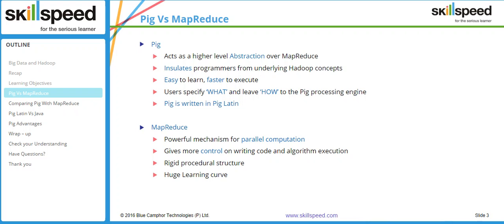Another key advantage of MapReduce is that it is really helpful in analyzing unstructured data. Whereas Pig will fail with audio, video, and completely unstructured data, MapReduce will definitely work on those datasets. So whenever you have a huge amount of unstructured data, MapReduce is your only choice.